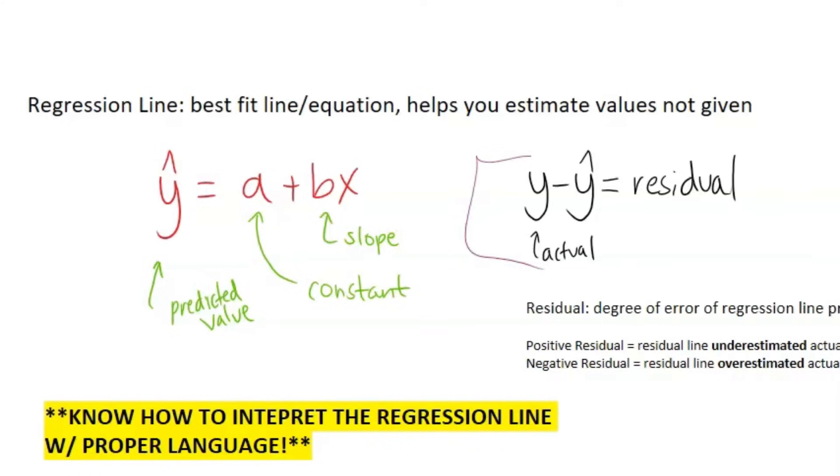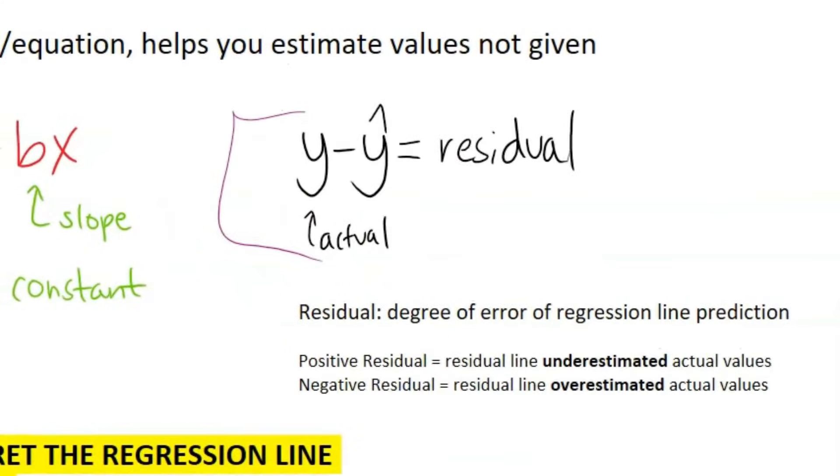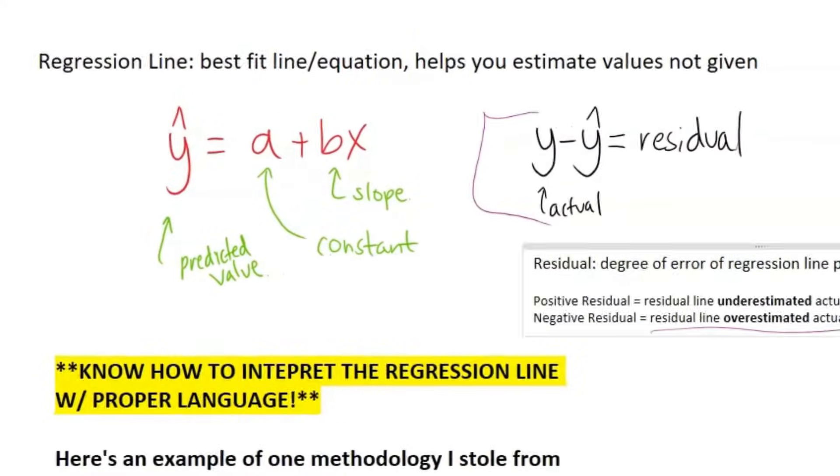Something you probably haven't seen before is your residual. So your residual is just the degree of error of regression line prediction. So let's say my actual value is 5 and the predicted value is 10. Then you get negative 5 as the residual. So that's a negative residual, and negative residuals mean you overestimated. A positive residual would mean that you underestimated the actual value.